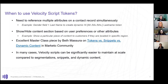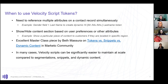So when should we be thinking about using Velocity? If you have to reference multiple attributes about a contact at the same time — for example, you have three or four attributes and you multiply those combinations — you'd suddenly need like 60 segments. A simple example: combining a gender field and last name to make a dynamic 'Hello Mr./Mrs./Miss Last Name.' You can also show or hide content based on preferences rather than creating a segment for every combination.